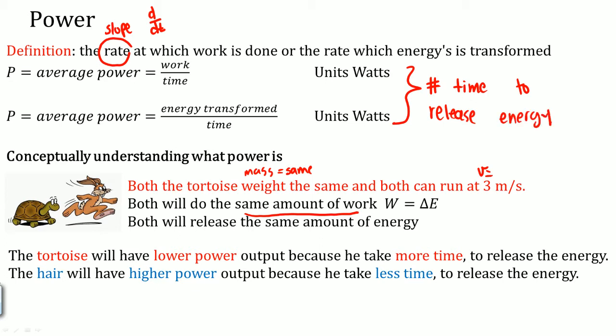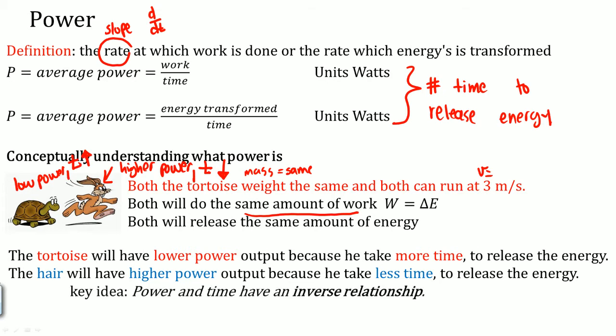So what is power essentially? Power can be seen as the amount of time to release energy. If we say that an object has high power, like the hare, high power, we would say that the time taken is low. If the hare has low power, that means the time was high. This leads us up to our key idea. Power and time have an inverse relationship. P is equal to either work over time or P is equal to delta KE over time. Notice time is in the bottom, the denominator. This is why we say power and time have an inverse relationship. If power goes up, time goes down. If power goes down, time will go up.